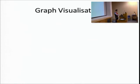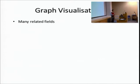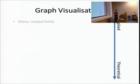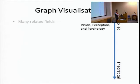Graph visualization is part of information visualization more traditionally, and it looks at a particular type of data which has a topological structure. It has many related fields. If I put an axis here, the top end is more applied and closer to humans, the bottom is more theoretical. It's related to visual perception, psychology, and cognitive psychology.